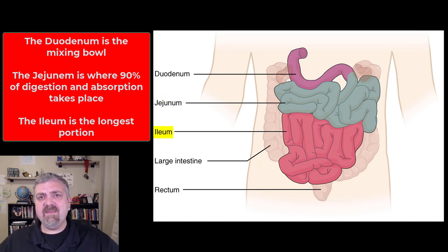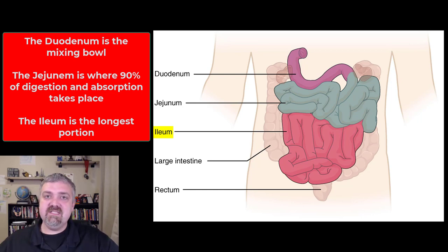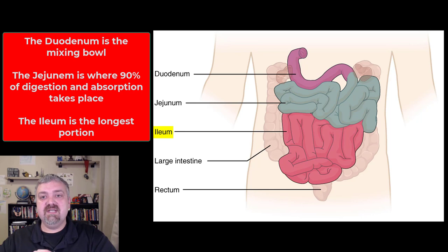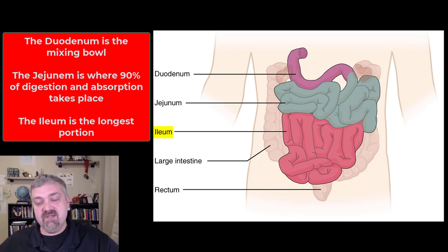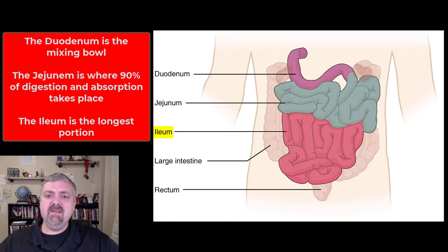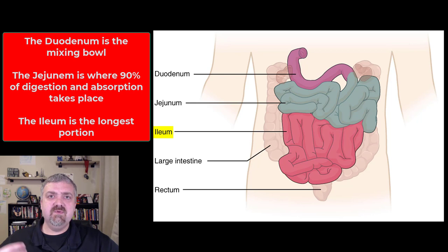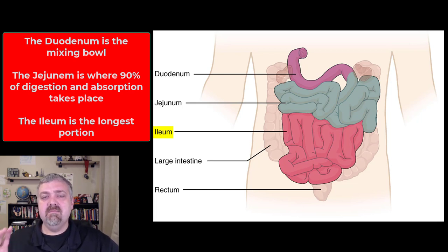The ileum is famous for being the longest portion of the small intestine — about six feet long. It connects your small intestine to your large intestine at an area called the cecum, and there's a valve there called the ileocecal valve. The ileum's primary job is to capture a little bit more digestive products — it absorbs B12, bile, and a handful of other things. But most digestion and absorption takes place at the jejunum.